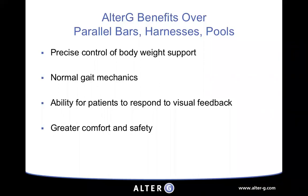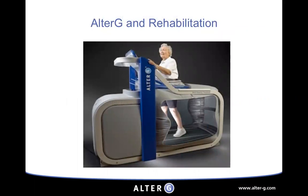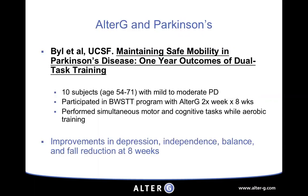Greater comfort and safety are highlights of the anti-gravity treadmill — patients are willing to work longer sessions. We've had stroke patients go up to 45 minutes just practicing gait, standing, and weight shifting. In the rehabilitation setting, a study by Nancy Beal out of UCSF used the anti-gravity treadmill with Parkinson's patients. Ten subjects participated in body weight supported treadmill training two times a week for eight weeks, performing simultaneous motor and cognitive tasks during aerobic training — throwing a ball, performing word problems — and showed improvements in depression, independence, balance, and fall reduction.